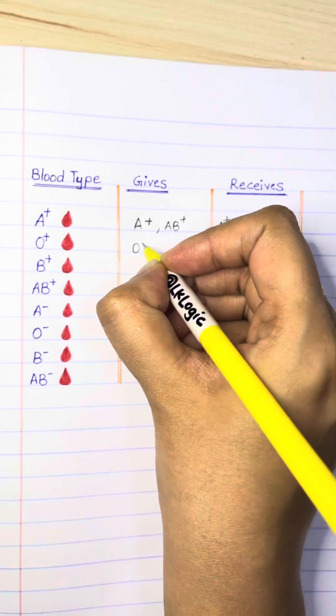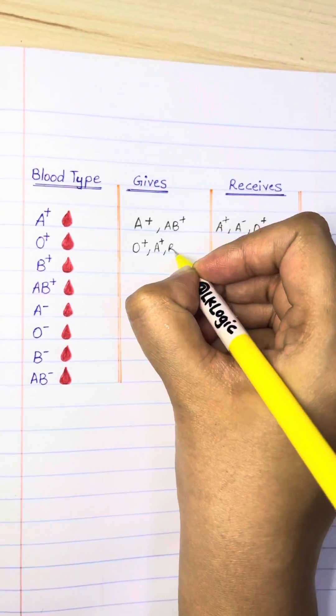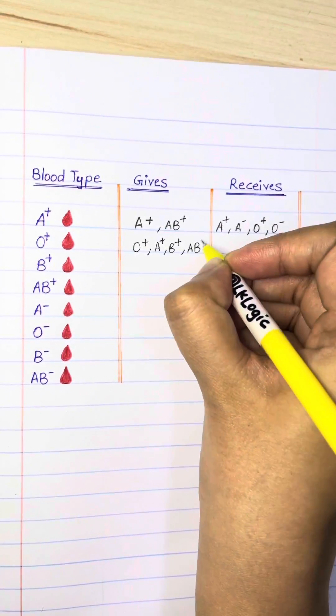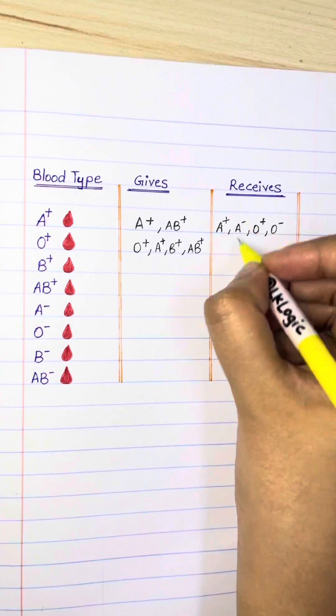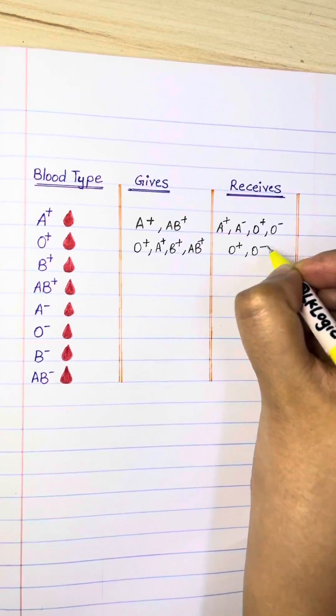O positive can donate blood to O positive, A positive, B positive, and AB positive, and can receive from O positive and O negative.